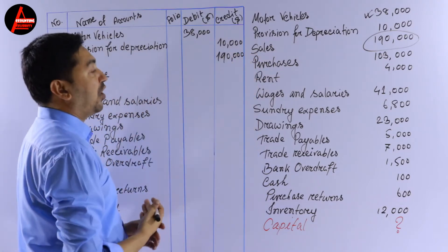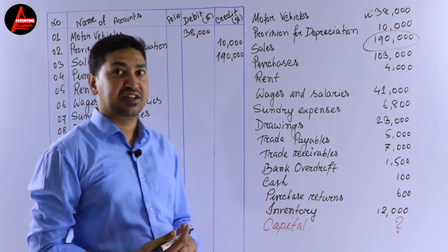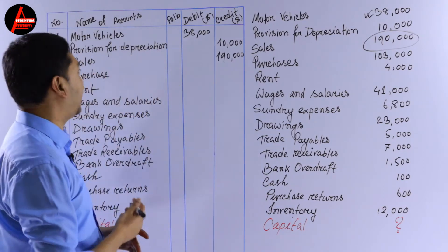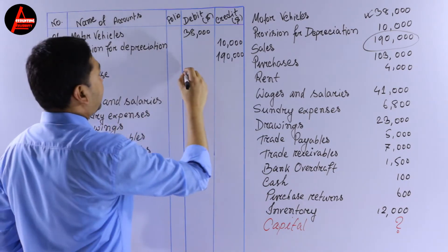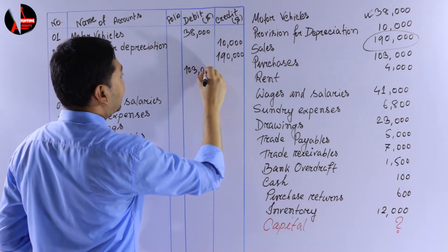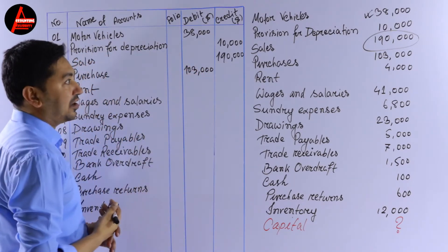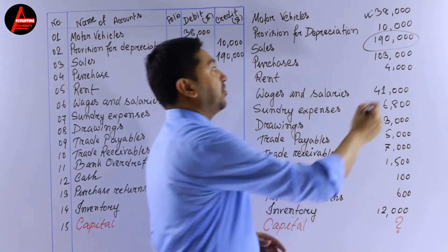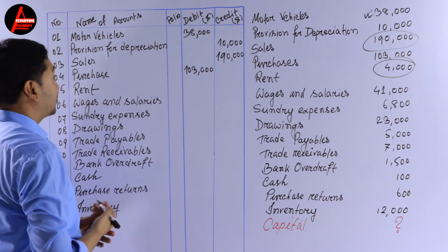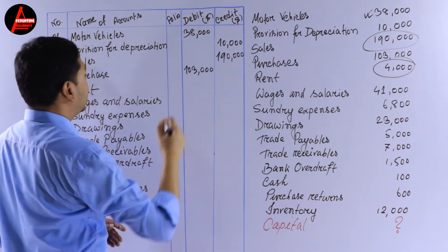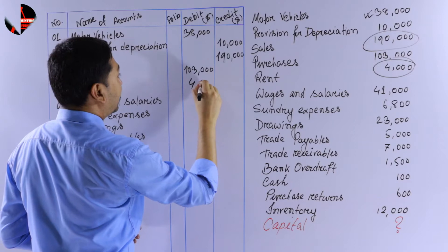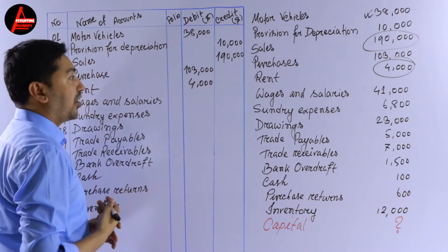Next is purchases — it's an expense nominal account, so expenses come on the debit side. Write purchases: 103,000 dollars on the debit side. Next we have rent — 4,000 dollars. Rent is also an expense, so it goes on the debit side: 4,000 dollars.